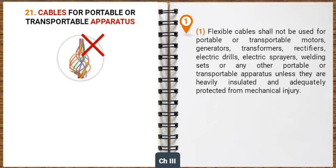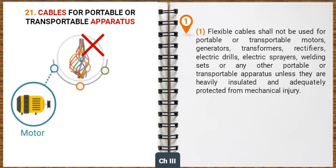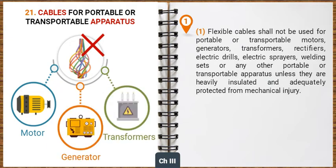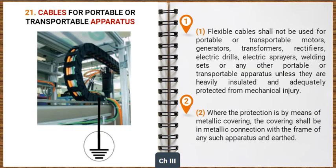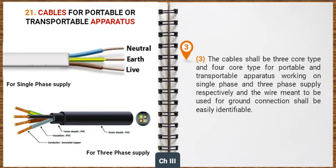Now let's learn about the general safety requirements for cables for portable or transportable apparatus. Flexible cables shall not be used for portable or transportable motors, generators, transformers, rectifiers, electric drills, electric sprayers, welding sets or any other portable or transportable apparatus unless they are heavily insulated and adequately protected from mechanical injury. Where the protection is by means of metallic covering, the covering shall be in metallic connection with the frame of any such apparatus and earthed. The cables shall be three-core type and four-core type for portable and transportable apparatus working on single-phase and three-phase supply respectively, and the wire meant to be used for ground connection shall be easily identifiable.